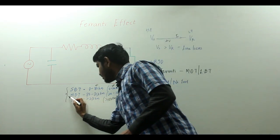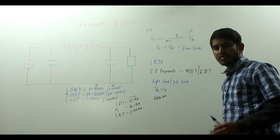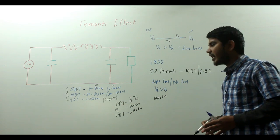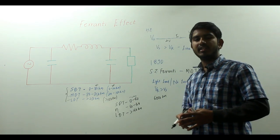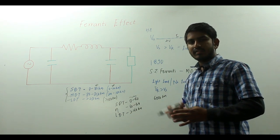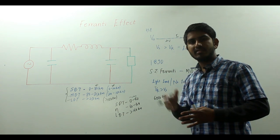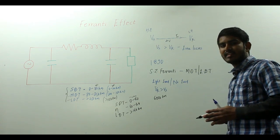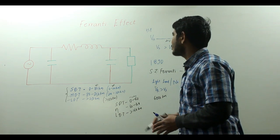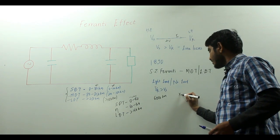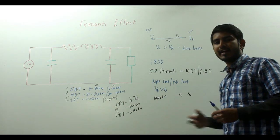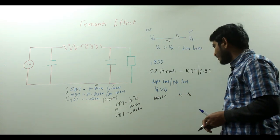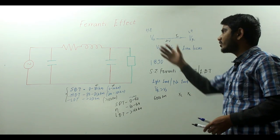The Ferranti effect occurs in medium distance and long distance transmission lines. Remember, this is very important — in interviews you must state that it occurs under light loading or no load operation, and in medium or long distance lines. The long distance transmission line inherently possesses inductance and capacitance distributed through the entire line length, and these inductance and capacitance are responsible for the Ferranti effect.